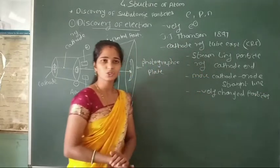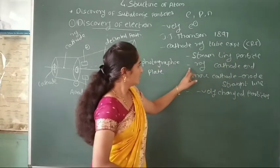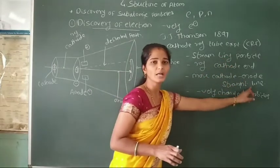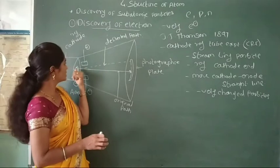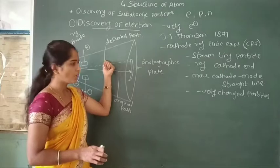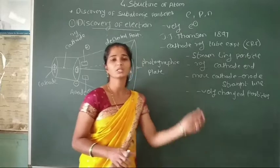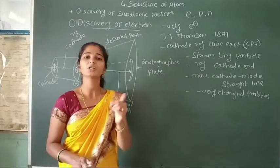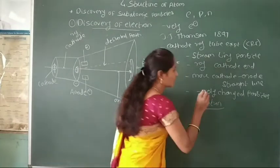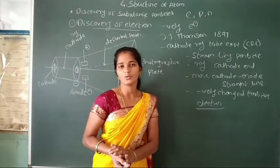According to J.J. Thomson, these cathode rays are a stream of tiny particles. These rays are produced at cathode and migrate from cathode to anode in a straight line. But after passing the pole, these cathode rays are deflected toward the positive magnet, meaning they are negatively charged particles. Therefore, these negatively charged particles are named electrons. This is the discovery of electrons.